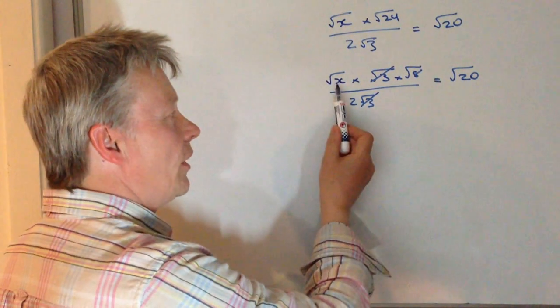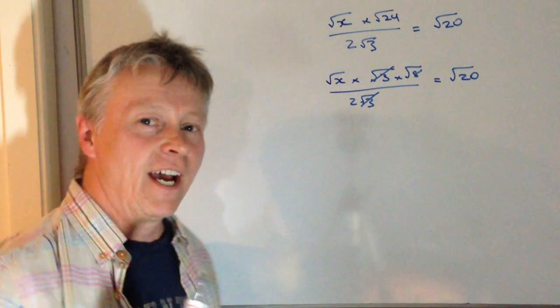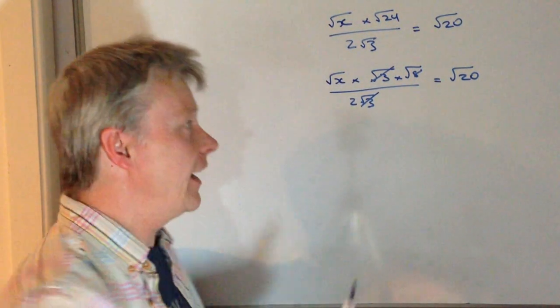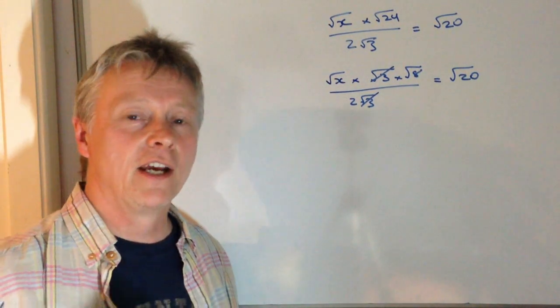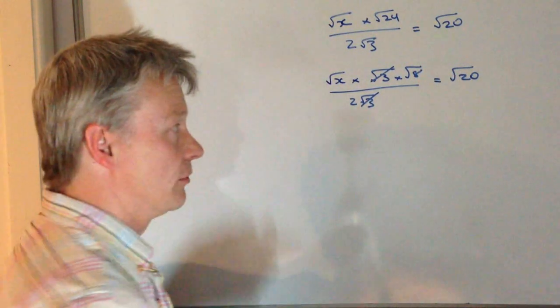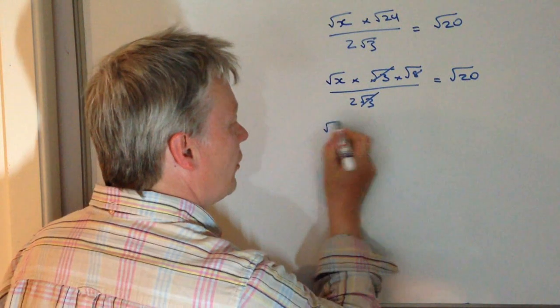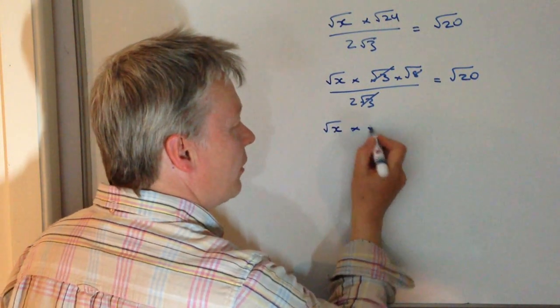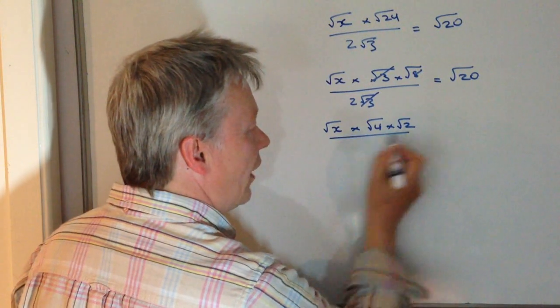So I'm now in a position where I've got root x times root 8 divided by 2. And also the other thing is that if you look at that root 8, well that's the same as saying 4 times 2 or root 4 times root 2. So I can further change that by saying I've got root x multiplied by root 4 times root 2 divided by 2.